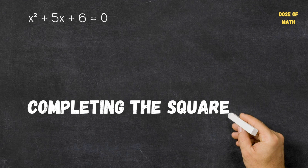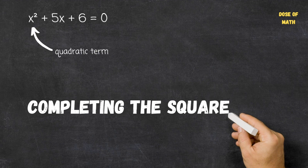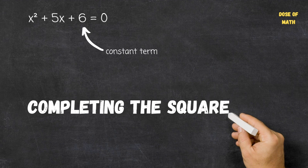So if we take x squared plus 5x plus 6 equals 0, as with any quadratic equation, there are three fundamental components of the expression. So we have the quadratic term here, followed by the linear term, and finally the constant term, which is just some numerical value.